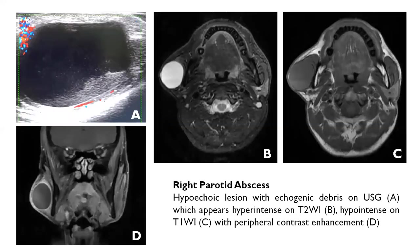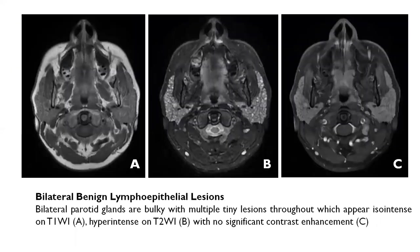Our case of right parotid lymphadenitis showed a hypoechoic lesion with echogenic debris on ultrasound. It appeared hyperintense on T2, hypointense on T1, with peripheral contrast enhancement. Here is a case of bilateral benign lymphadenitis, where both parotid glands were bulky with multiple tiny lesions throughout, which appear isointense on T1, hyperintense on T2, with no significant contrast enhancement.